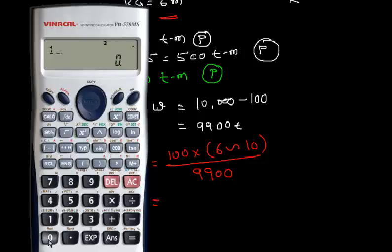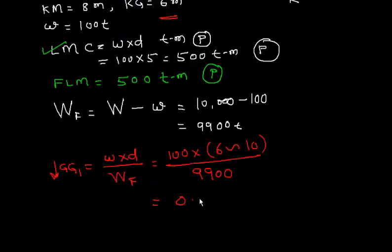Let us find the value. It is 100 multiplied by 6 minus 10, the difference is 4, divided by 9,900. I get 0.04 meters.